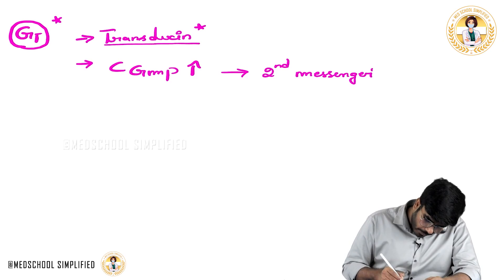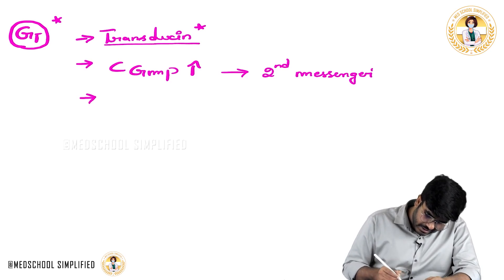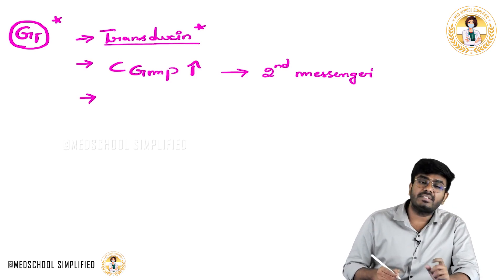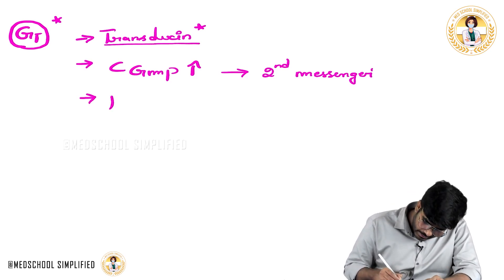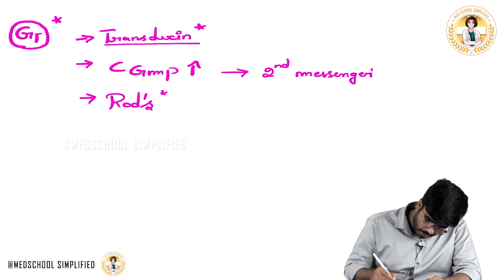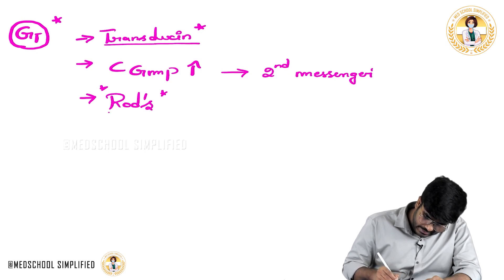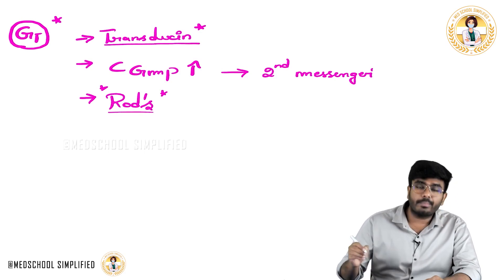An important point: Gt is present in rod cells — in the rod cells of the eyes, this Gt or transducin is present.